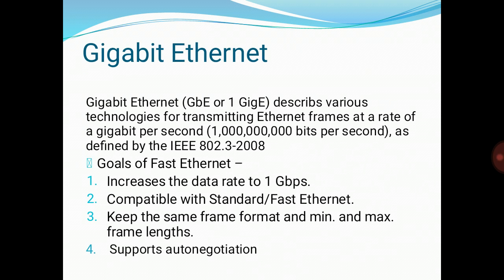Now we will learn about Gigabit Ethernet. The need for even higher data rates resulted in the design of the Gigabit Ethernet protocol. The IEEE committee calls the standard 802.3. Gigabit Ethernet upgrades the data rate to 1 Gbps, is compatible with standard or Fast Ethernet, uses the same 48-bit address, the same frame format, the same minimum and maximum frame lengths, and supports auto-negotiation as defined in Fast Ethernet.